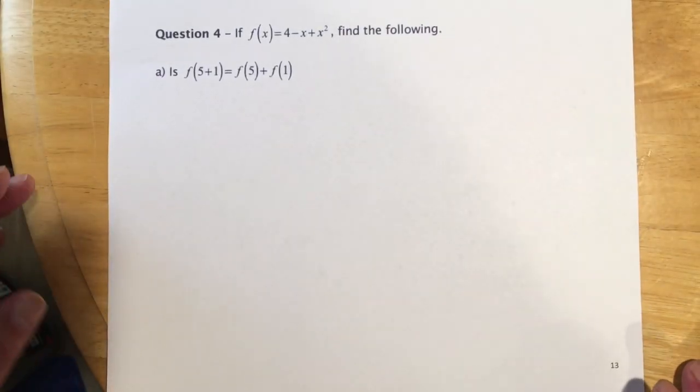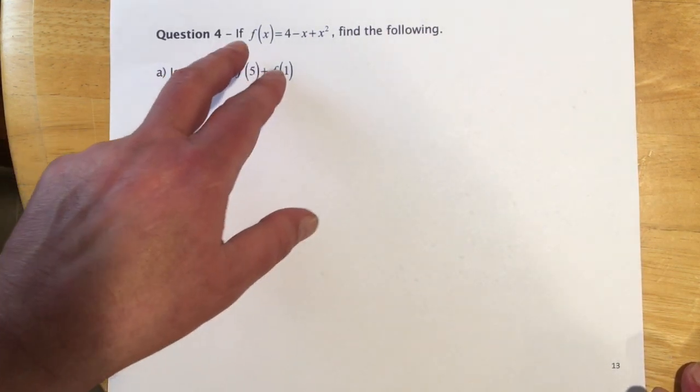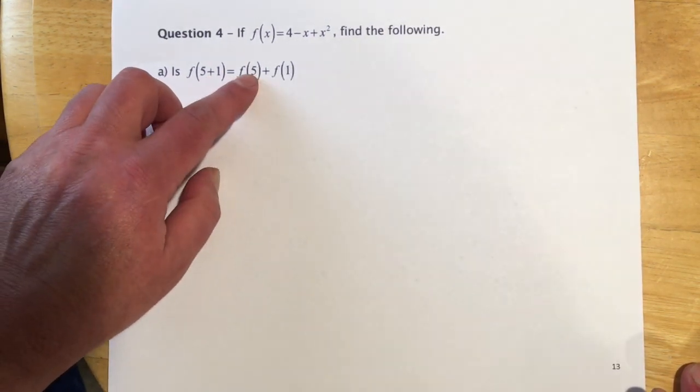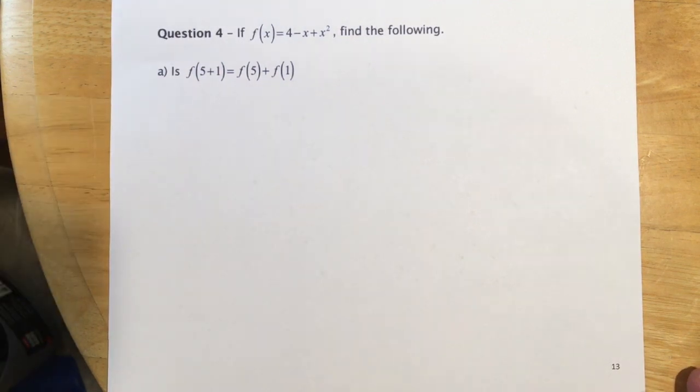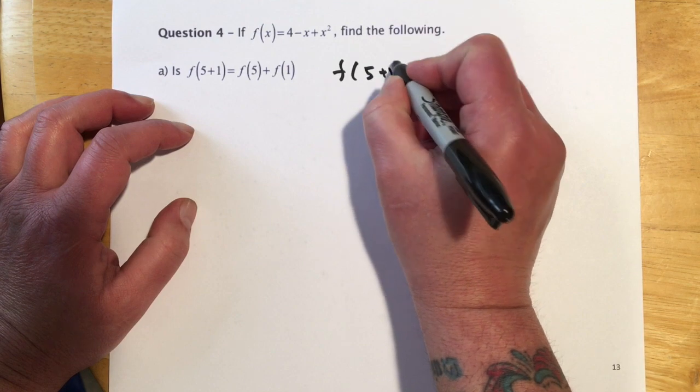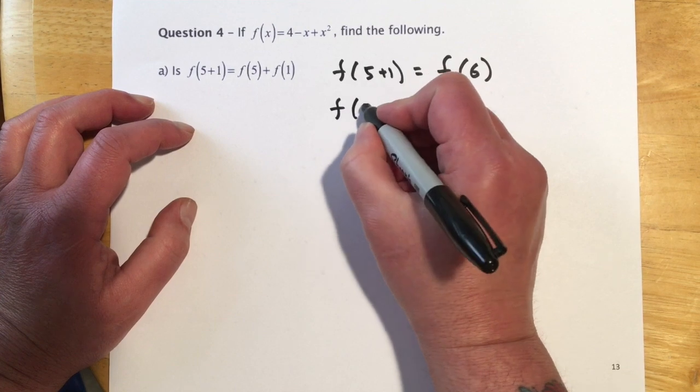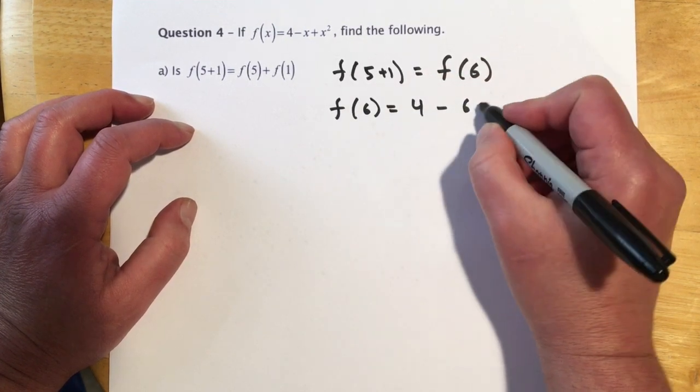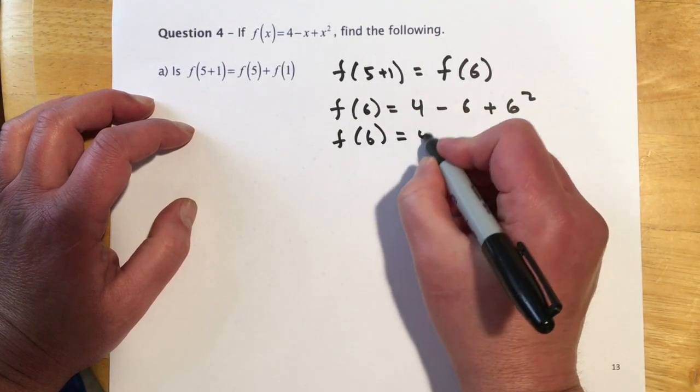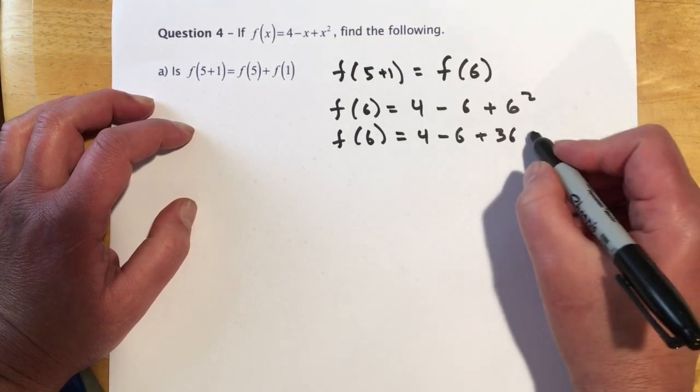Okay, so question 4 has several parts. And this is the one I would have you guys try in class. So if f of x is this, find the following. And then it's asking, is f of 5 plus 1 the same thing as f of 5 plus f of 1? So f of 5 plus 1, let's do that piece first, would be the same thing as f of 6. So if I find f of 6, that will be 4 minus 6 plus 6 squared. Or f of 6 will equal 4 minus 6 plus 36. So that would be down 2 back up 36, so 34.